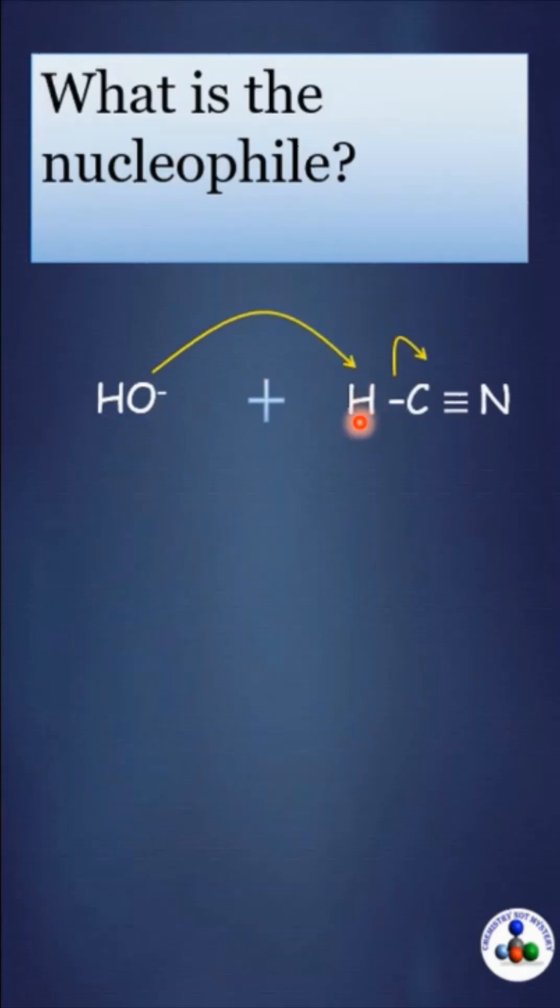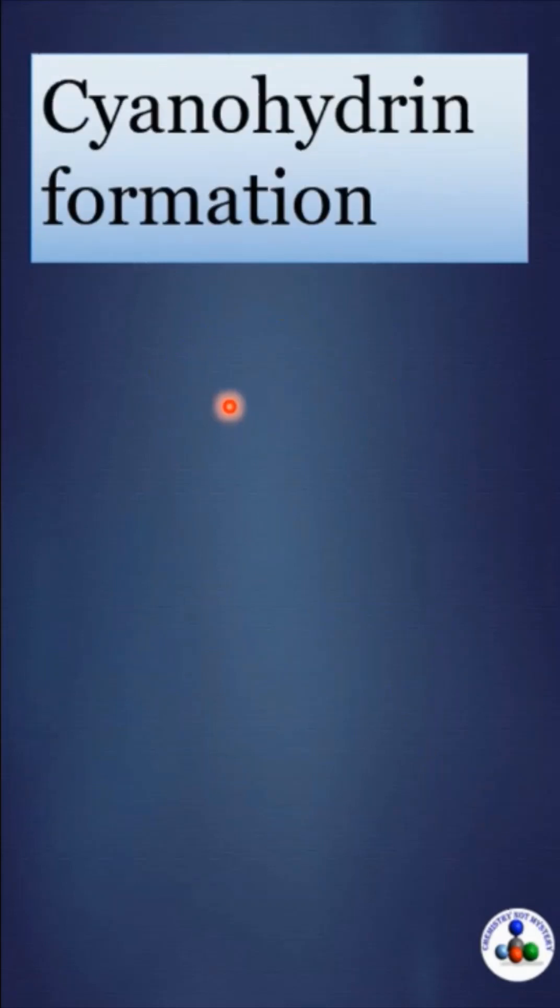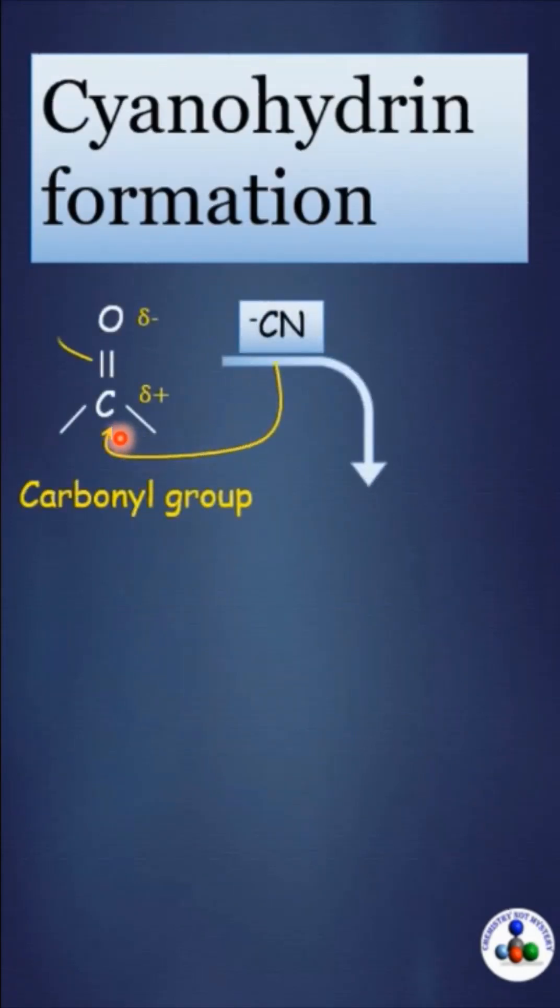When base abstracts proton from hydrogen cyanide, cyanide ion is produced which acts as a nucleophile. The cyanide nucleophile will get attached to carbonyl carbon and negative charge will develop over oxygen.